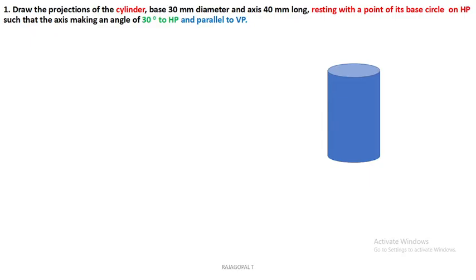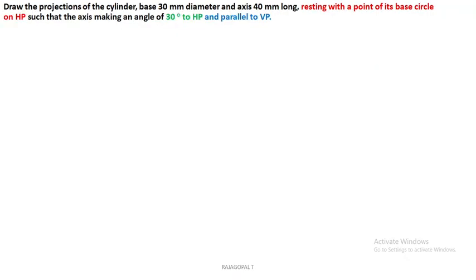In the top view, I can see one circle — the top face circle is visible, and the bottom face circle is invisible from the top view. In the front view, I can see a rectangle. With this we will move on to the solution.